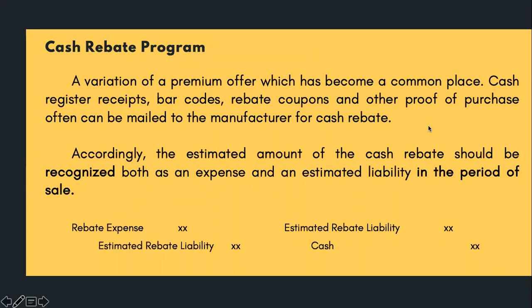For example, a TV is sold for a certain amount, and for every TV the customer can receive a rebate of 500 pesos. Again, this is an estimated liability — not 100% is recognized, only based on your estimate from past experience. So we recognize an expense account and a liability account in the period of sale.